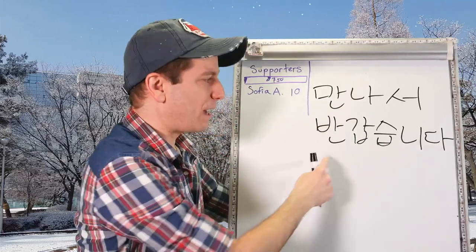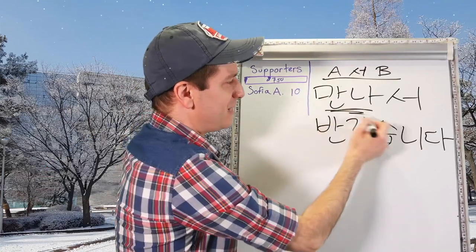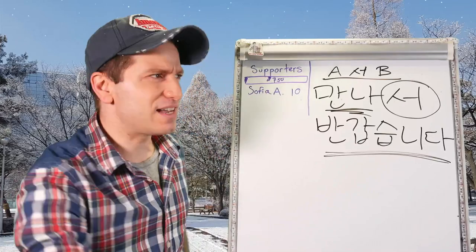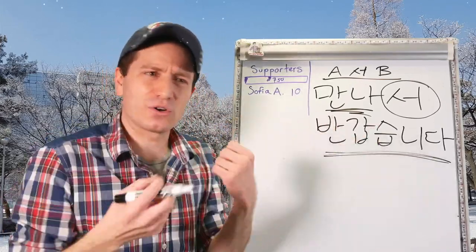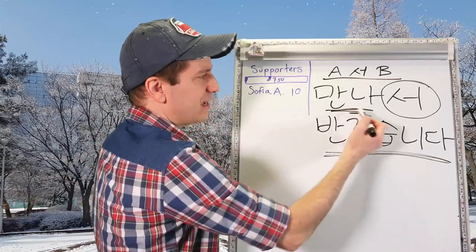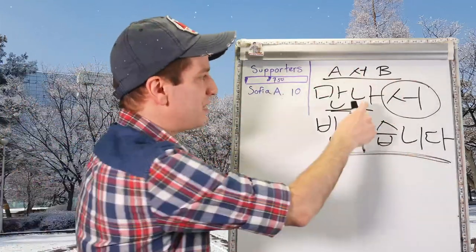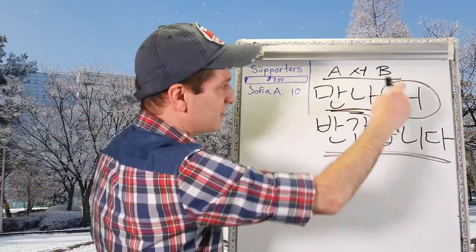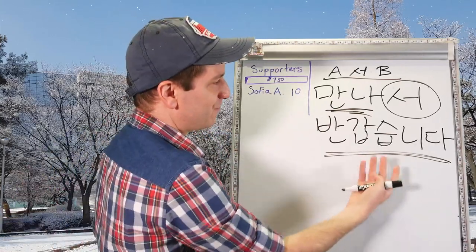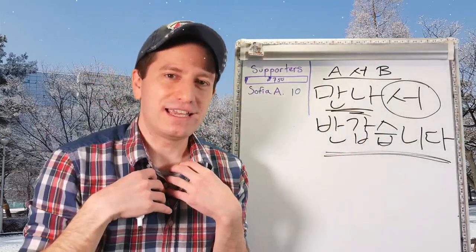만나서 반갑습니다, or 반가워요 depending on how you're using it. 만나다 means to meet — meeting you, 서, because of that I feel 반갑다. 반갑다 is like to be happy or glad to see someone. So I feel glad because I met you. 만나서 반갑습니다 means 'nice to meet you' — literally, I feel glad because we met. Meeting is the cause of me feeling happy.